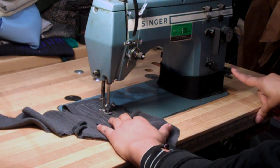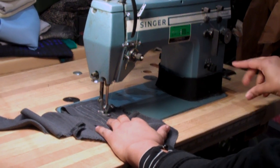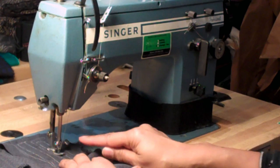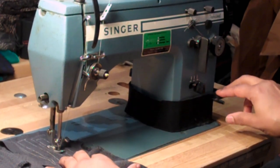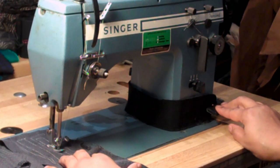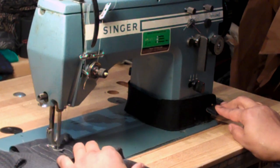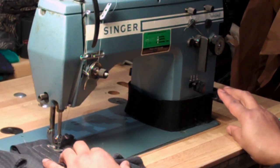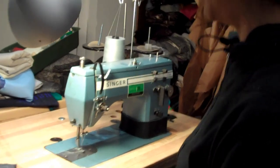This bar is the reverse bar. So you always stop, press that down, and the machine will sew backwards for backstitch and tacking. Exactly. Part two should be how to change the bobbin.